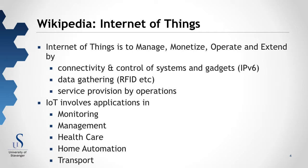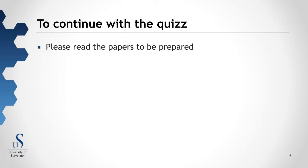The internet of things involves applications in monitoring, management, healthcare, home automation and transport — and of course combinations of these into almost any kind of things we see around us. Please read the papers to be prepared for the quiz, and when you have done so, continue with the quiz for this topic.